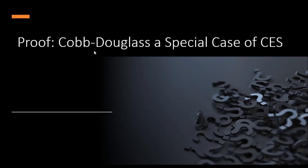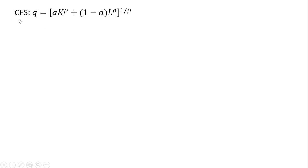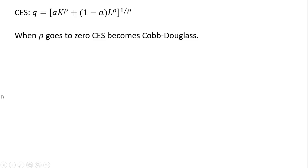In this video, we're going to show that the Cobb-Douglas production function is a special case of the constant elasticity of substitution production function. Here is our CES production function. What we're going to show is that when rho goes to zero, this CES production function becomes a Cobb-Douglas production function.